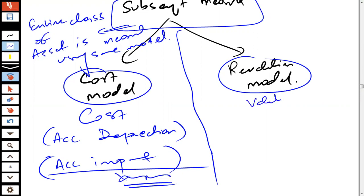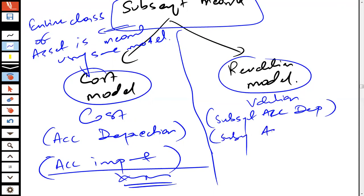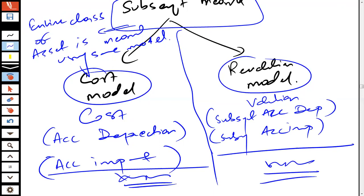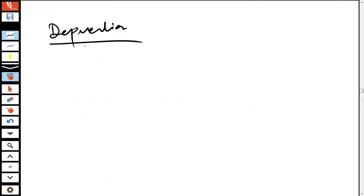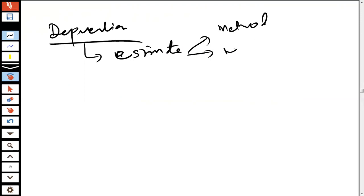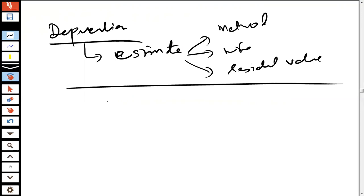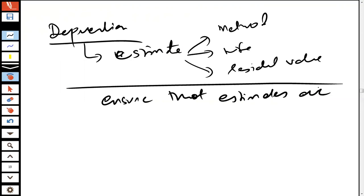Under the revaluation model, the carrying amount is valuation less subsequent accumulated depreciation less subsequent accumulated impairment loss. IAS 16 requires that depreciation involves various estimates — the depreciation method, the useful life of the asset, and the residual value. These estimates are required to be reviewed at each reporting date.